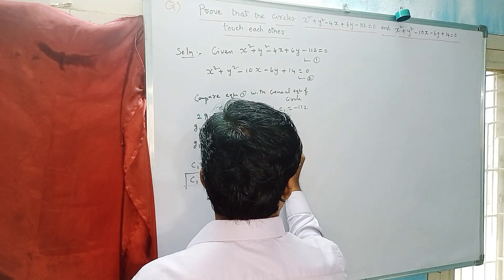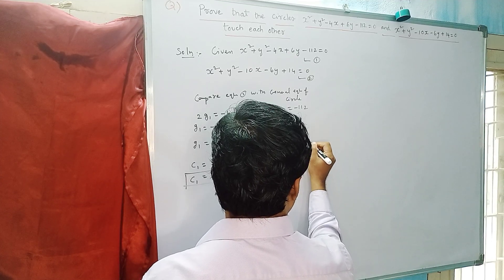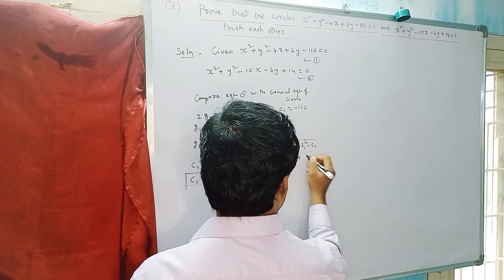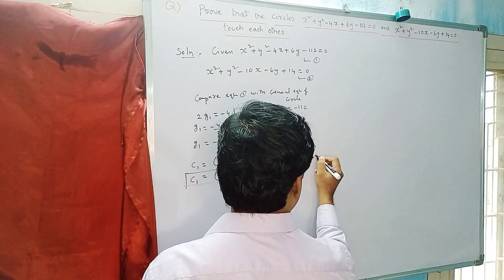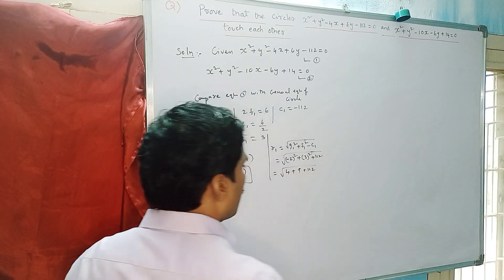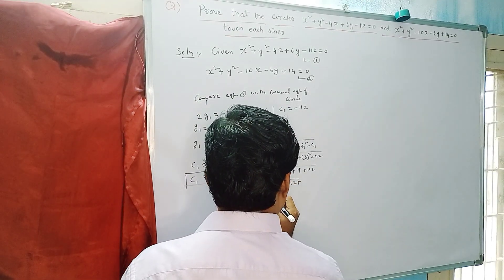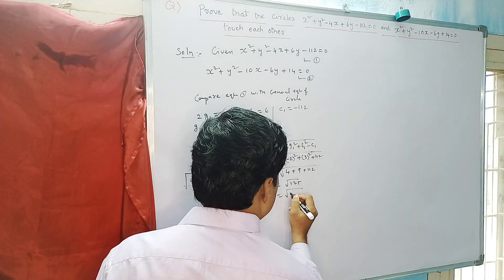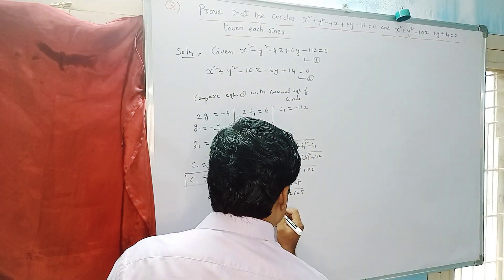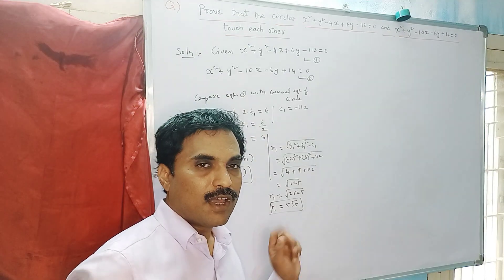Now find the value of r1. The formula is r1 = √(g1² + f1² - c1). Substituting: g1 = -2, so (-2)² = 4; f1 = 3, so 3² = 9; and c1 = -112, so -c1 = +112. Therefore r1 = √(4 + 9 + 112) = √125. We can write 125 as 25 × 5, and since 25 = 5², we take 5 out. So r1 = 5√5.